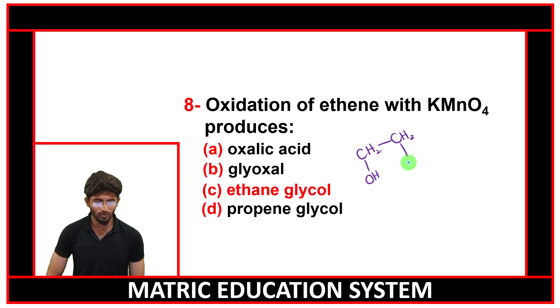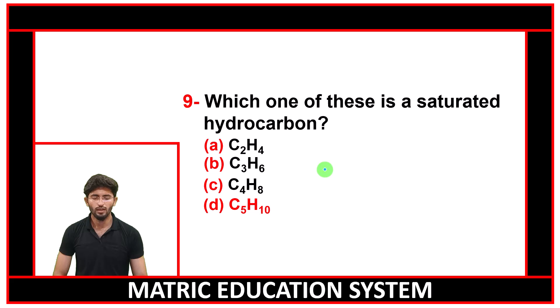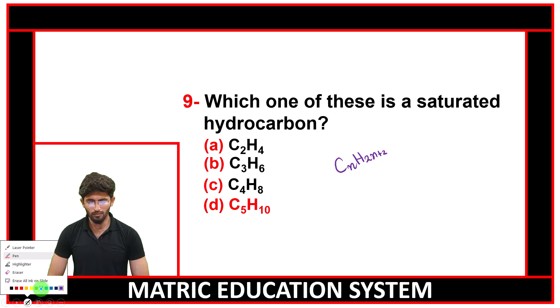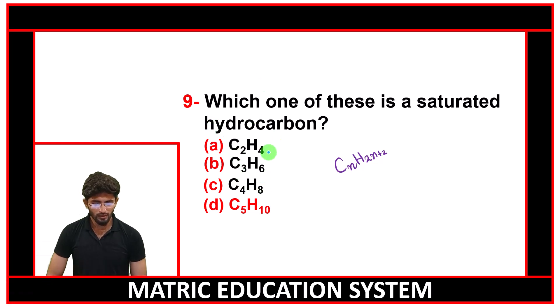Which one of the following is a saturated hydrocarbon? Saturated hydrocarbons follow CnH2n+2 as the general formula. You can see that in these compounds, only this hydrocarbon is followed. This is a saturated hydrocarbon compound.